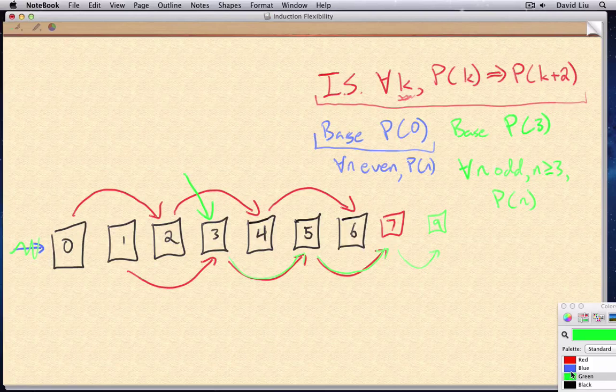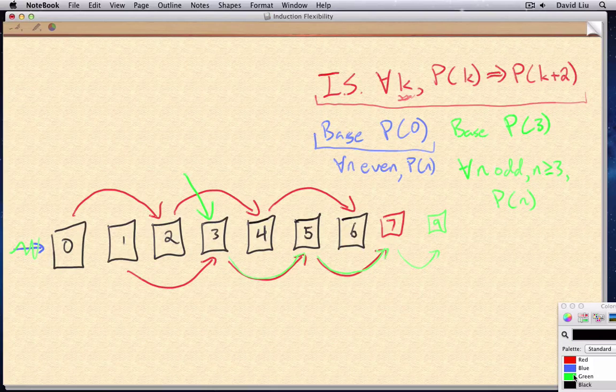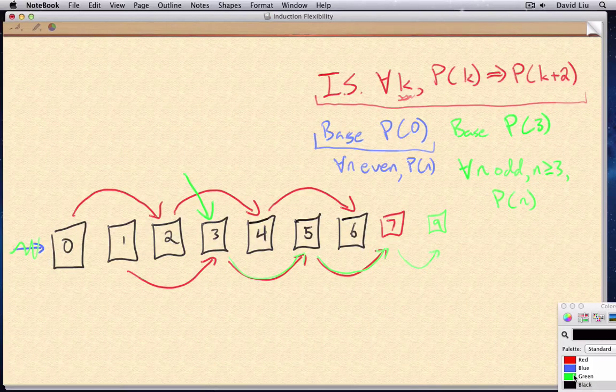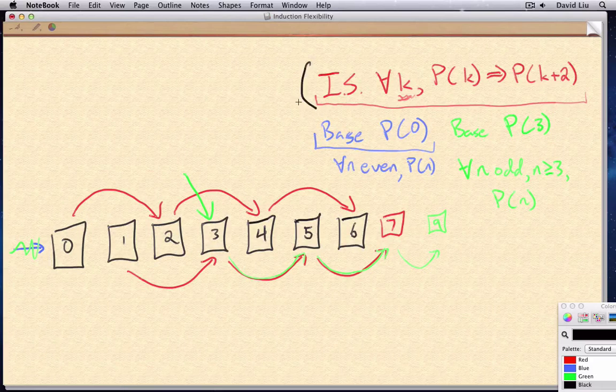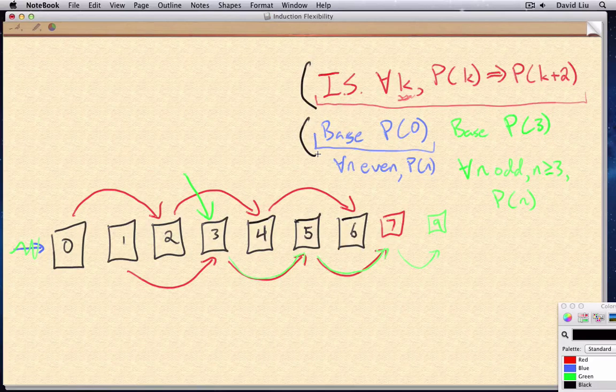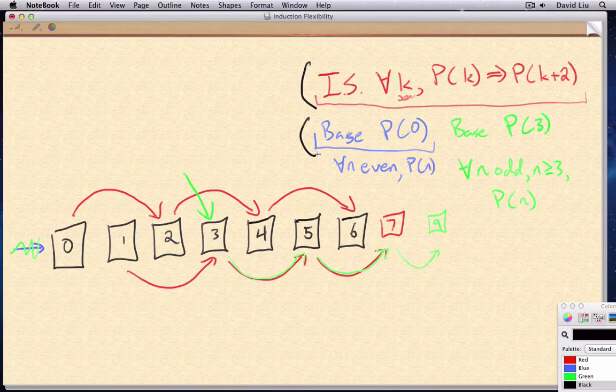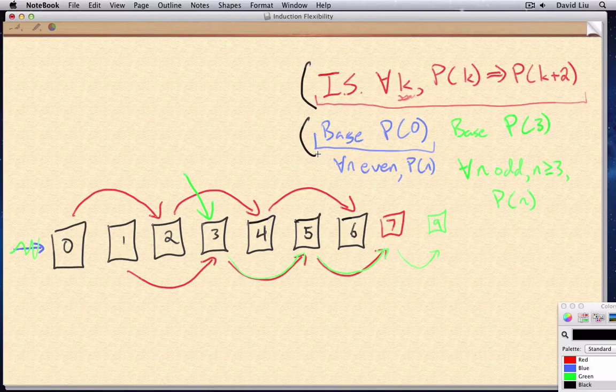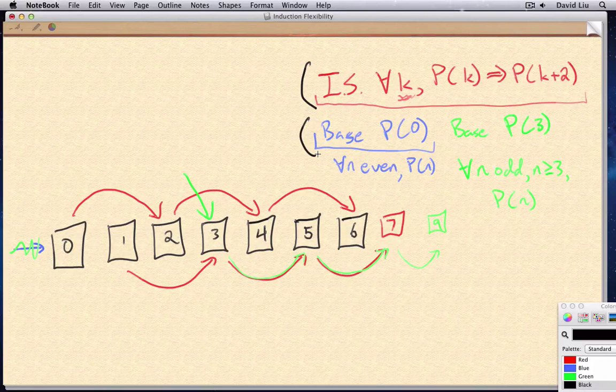So to sum up, there are two important takeaways from this video. The first is that, like in the triomino example, you'll often find cases where the induction step and the base case can be proved independently of one another. That is, you don't need to know anything from the induction step to prove the base case, and you don't even need to know anything about the base case to prove the induction step.